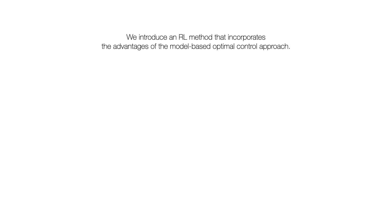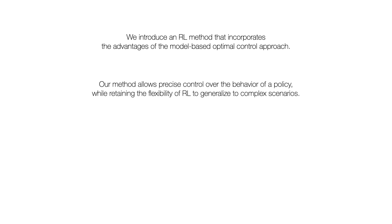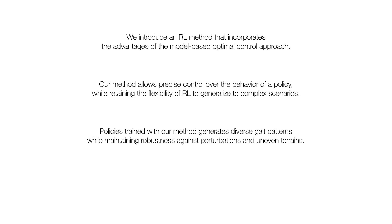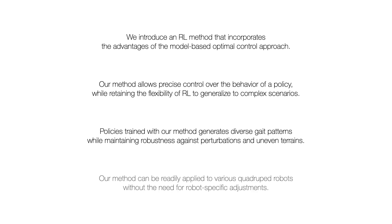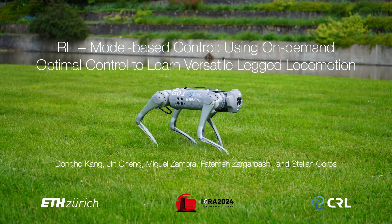In summary, we introduced a method that incorporates the advantages of the model-based optimal control approach. Our method allows precise control over the behaviors of the policy while retaining the flexibility of RL to generalize to complex scenarios. Policies trained with our method generate diverse gait patterns while maintaining robustness against perturbations and uneven terrains. Furthermore, our method can be readily applied to various quadruped robots without the need for robot-specific adjustments.